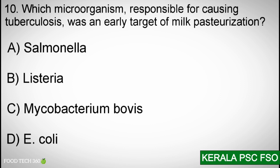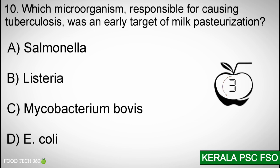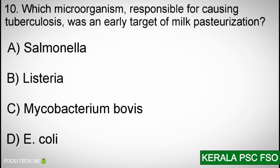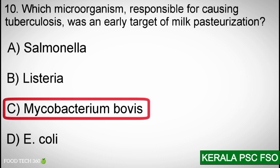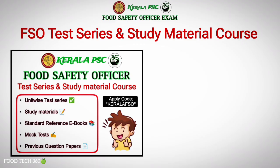Question number ten: Which microorganism responsible for causing tuberculosis was an early target of milk pasteurization? Options: A) Salmonella. B) Listeria. C) Mycobacterium bovis. D) E. coli. Correct answer: C) Mycobacterium bovis.